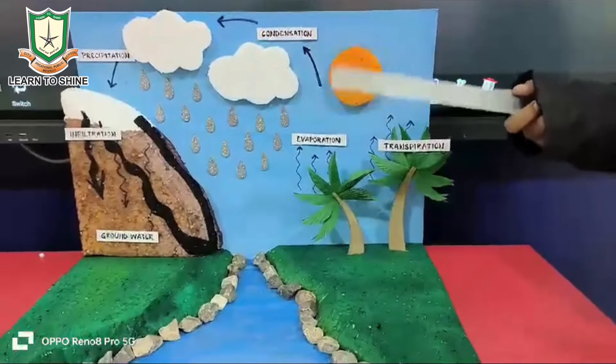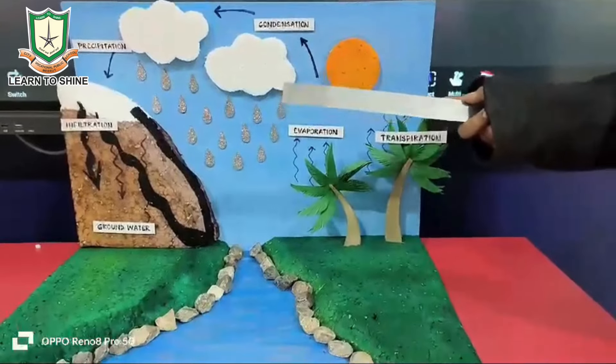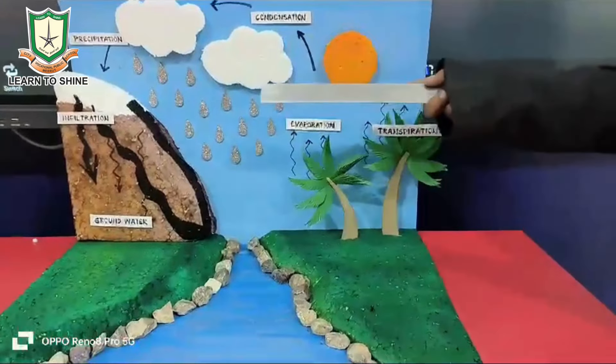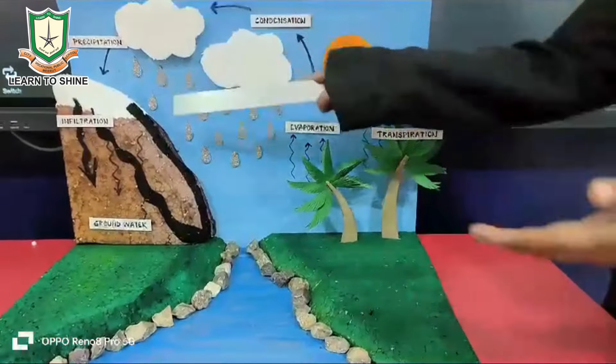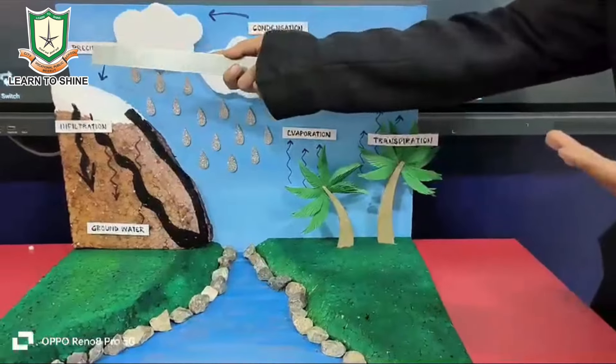And when water droplets fall down in the form of rain, this process is called precipitation.